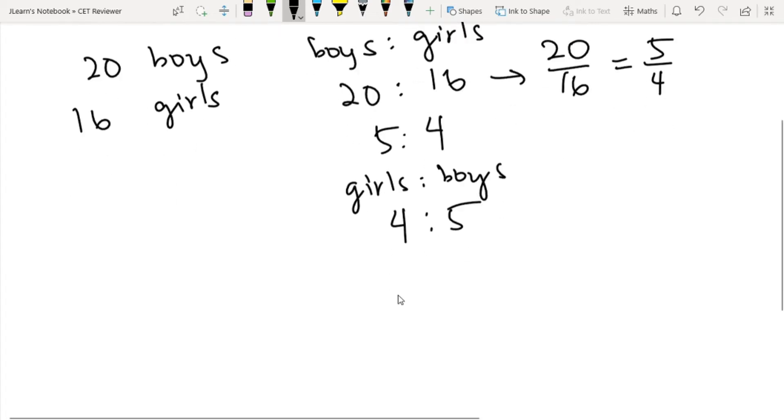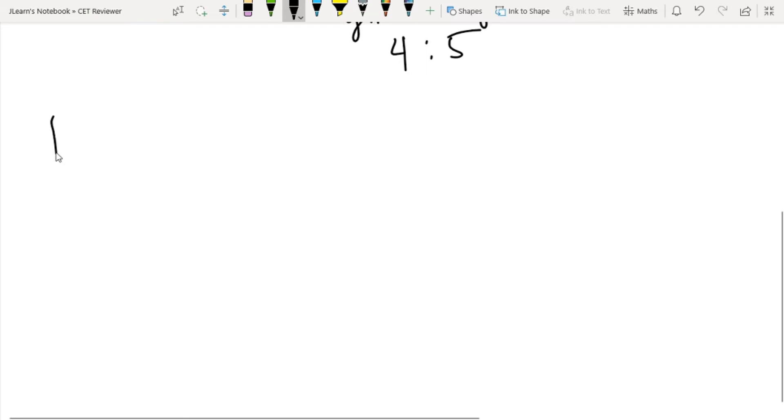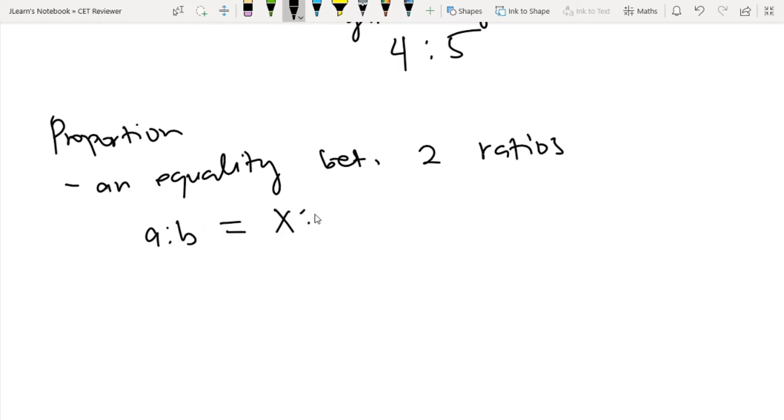What about proportion? Proportion is basically an equality between two ratios. So if a is to b equals x is to y, meaning a over b equals x over y.